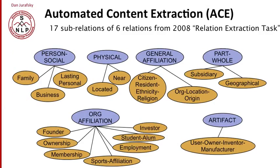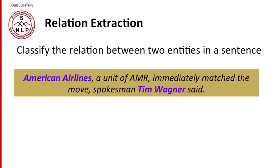We might use the relations from the Automated Content Extraction, or ACE, task. We had six meta-relations and 17 subtypes of those relations. Given that set of relations, our task is to classify the relation between two entities in a sentence.